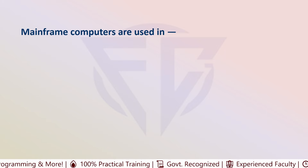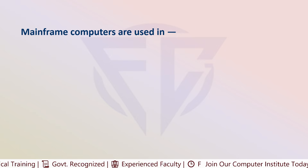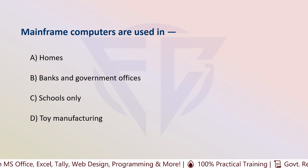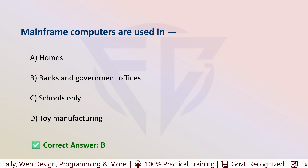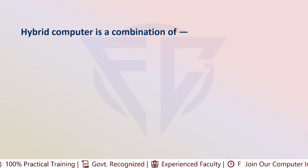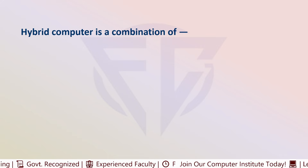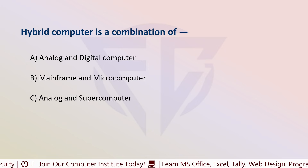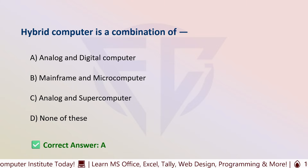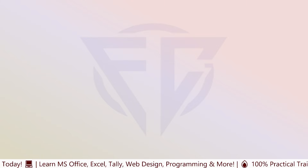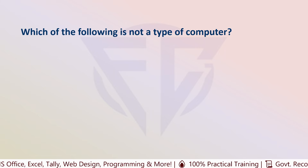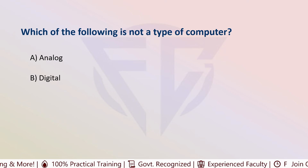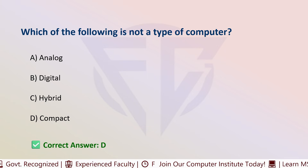The next question is: mainframe computers are used in — options are: A) Home, B) Banks and government offices, C) Schools only, and D) Toy manufacturing. The correct answer is B, banks and government offices. The next question: hybrid computer is a combination of — options are: A) Analog and digital computer, B) Mainframe and micro computer, C) Analog and super computer, and D) None of these. The correct answer is A, analog and digital computer. The next question: which of the following is not a type of computer? Options are: A) Analog, B) Digital, C) Hybrid, and D) Compact. The correct answer is D, that is compact.